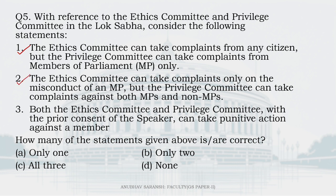Statement three: Both the Ethics Committee and the Privilege Committee, with the prior consent of the Speaker, can take punitive action against a member. Why would the committees take punitive action? They just make recommendations. Ultimately, the action is taken by the presiding officer — that is, the Speaker of the House — or a proper vote will take place in the house. So, statement three is wrong. Statements one and two are correct. How many statements are correct? B — only two.